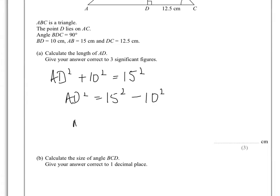That means that AD squared equals 15 squared, which is 225 minus 10 squared, which is 100. So that means that AD will be equal to the square root of 225 minus 100 is 125.